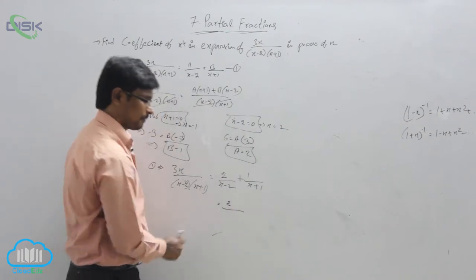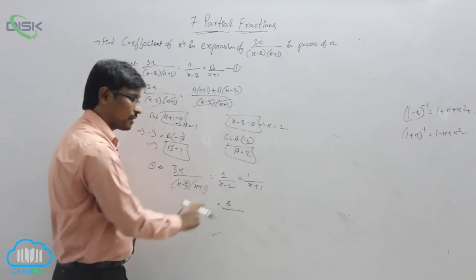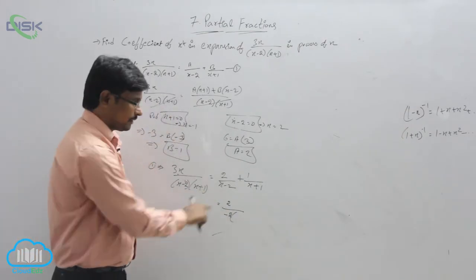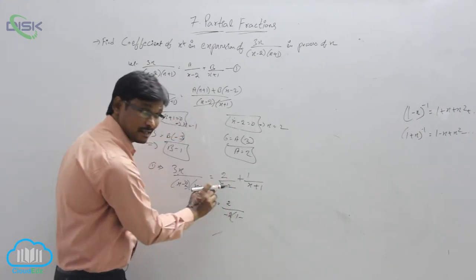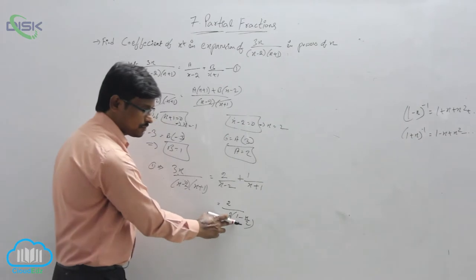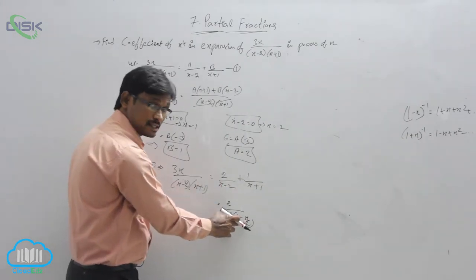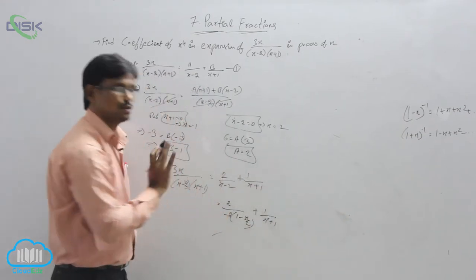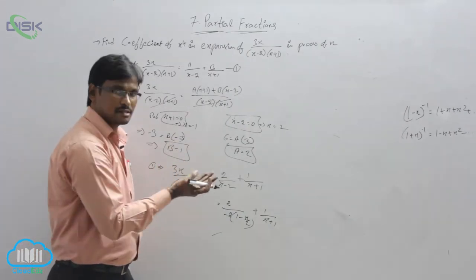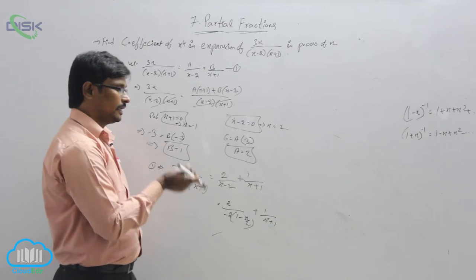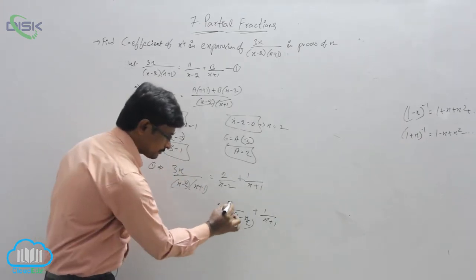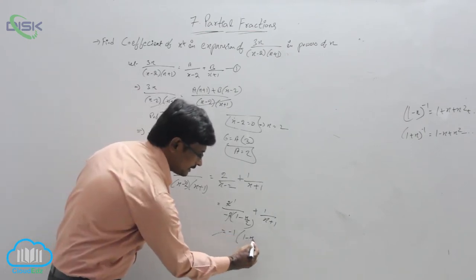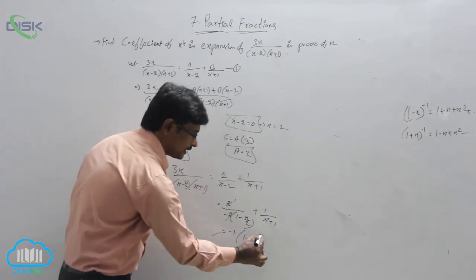For 2 over (x minus 2), the constant here is minus 2. Convert the constant into 1 by taking out minus 2, giving minus 1 times 1 over (1 minus x over 2). Observe: minus 2 times (1 minus x over 2) gives minus 2 plus x, which equals x minus 2. And for the second term, 1 over (x plus 1), the constant is already 1, so there is no problem.